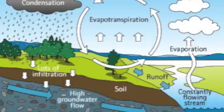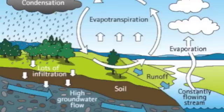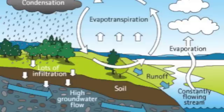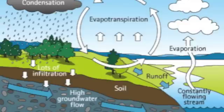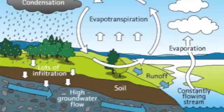Vapor made by evaporation, the clouds are made by condensation. Rain and snow is precipitation, water collects with accumulation. To the watershed, water flows to the ocean.